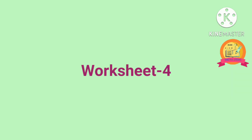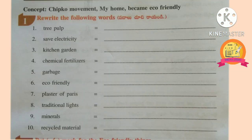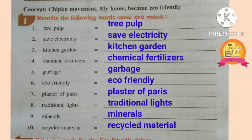Worksheet 4. First Roman: rewrite the following words. Tree pulp, save electricity, kitchen garden, chemical fertilizers, garbage, eco-friendly, plaster of Paris, traditional lights, minerals, recycled material.